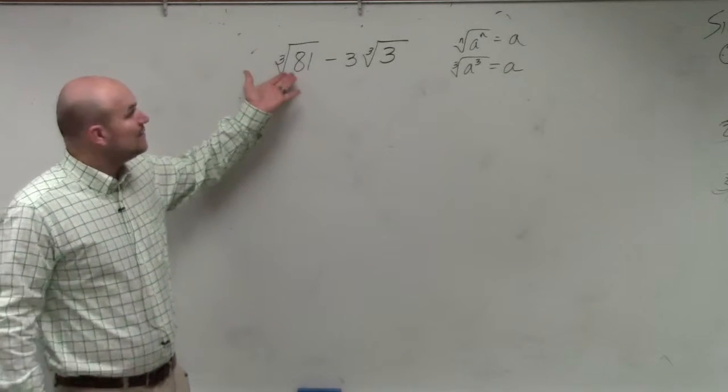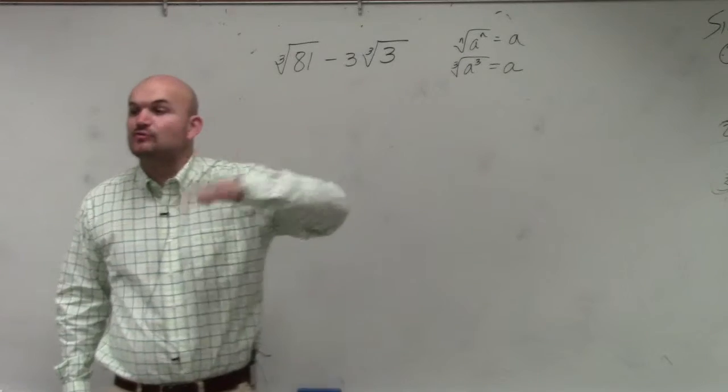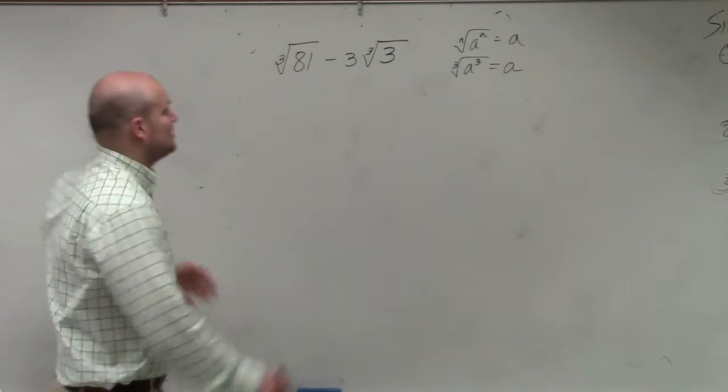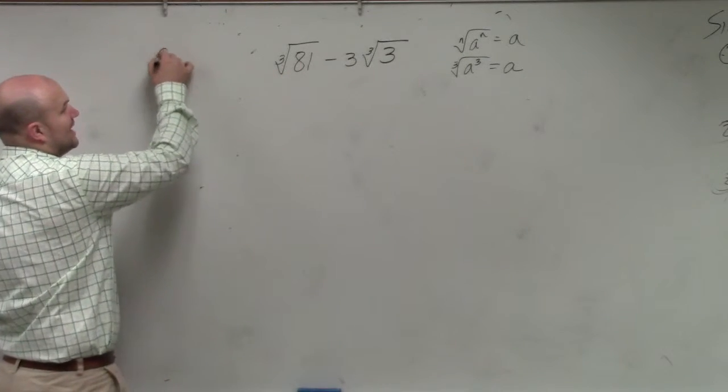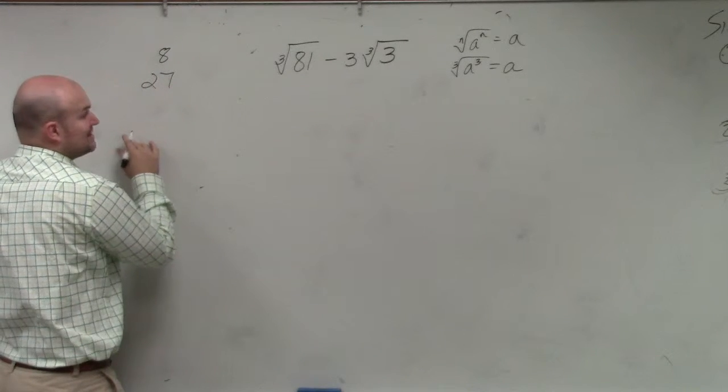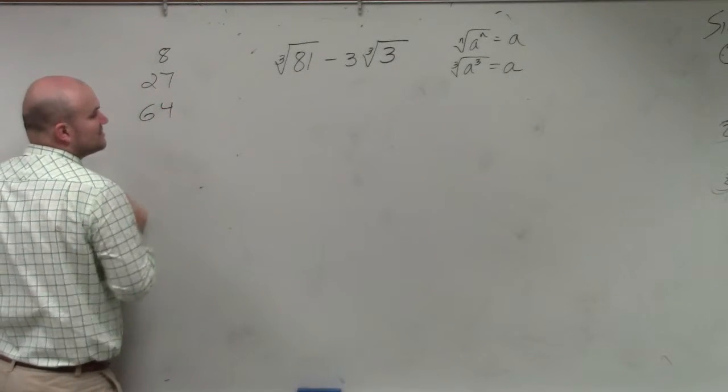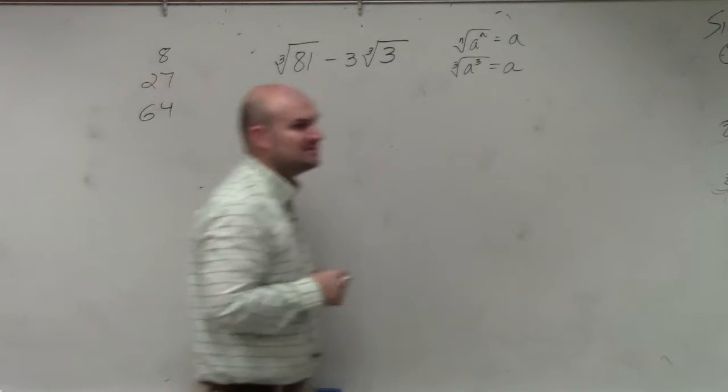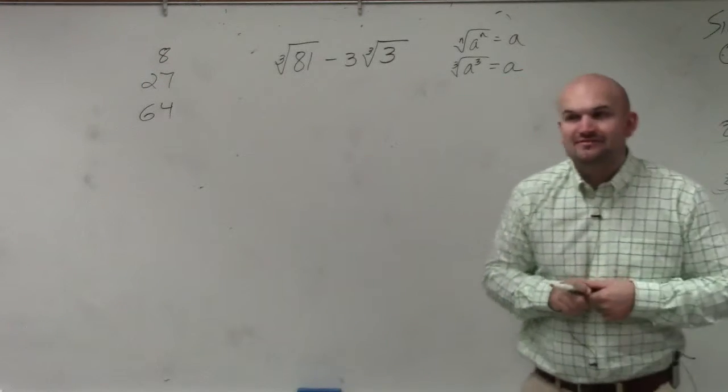So therefore, since 81 is not a cube number, we want to see, well, can we simplify it? Can we write it in terms of a cube number? Again, the cube numbers: 8, which is 2 times 2 times 2; 27, 3 times 3 times 3; and 64, 4 times 4 times 4. Do any of those numbers evenly divide into 81?